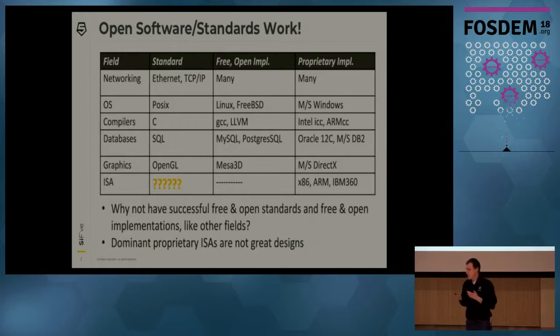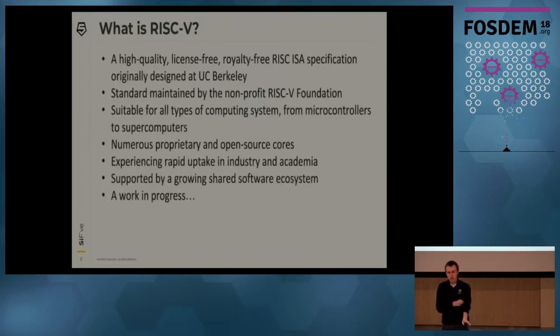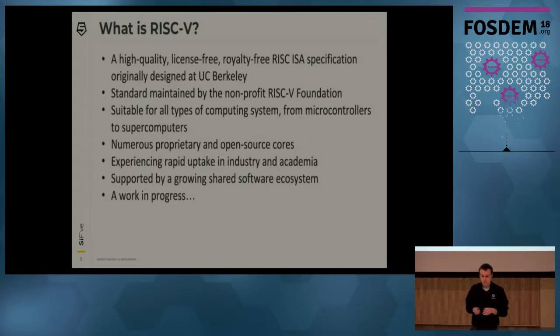The field is dominated by proprietary ISAs, and they're really not great designs. RISC-V is a high-quality, license-free, royalty-free ISA specification, originally designed at UC Berkeley. The standard is now maintained by a non-profit organization. It's suitable for all types of computing systems, from smallest IoT microcontrollers to the largest supercomputers. Numerous proprietary and open-source cores exist. It is currently experiencing rapid growth in industry and academia, and much software has been ported to it.